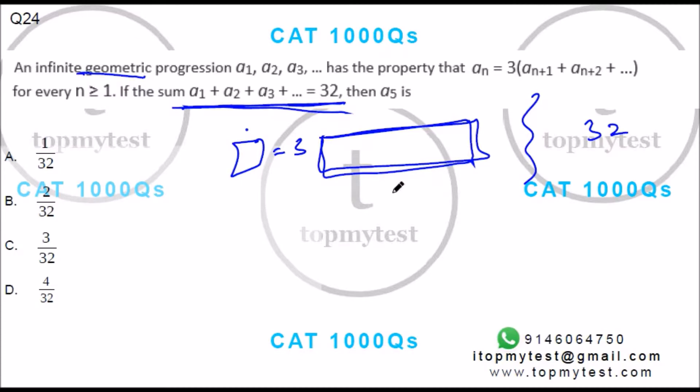if I split 32 in the ratio 1:3, this part will take one part and this will take three parts. So 32 split in the ratio 1:3 gives 24 as the first term and the rest of the terms add up to 8.